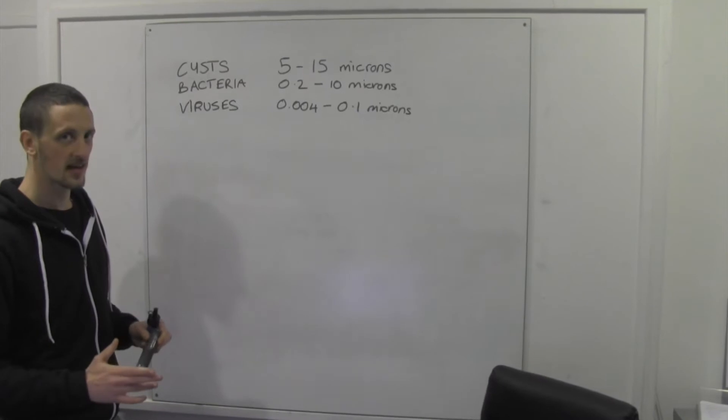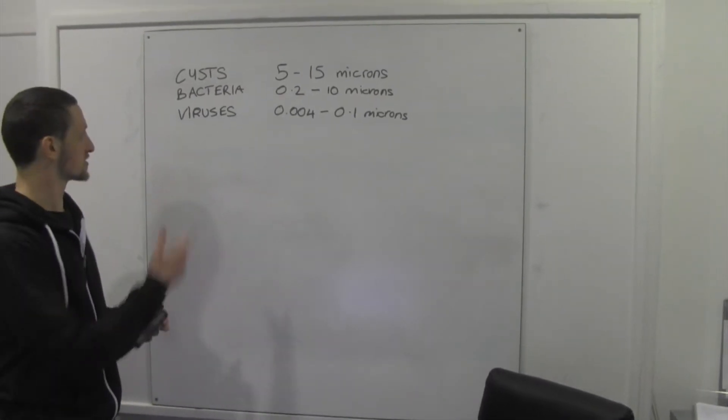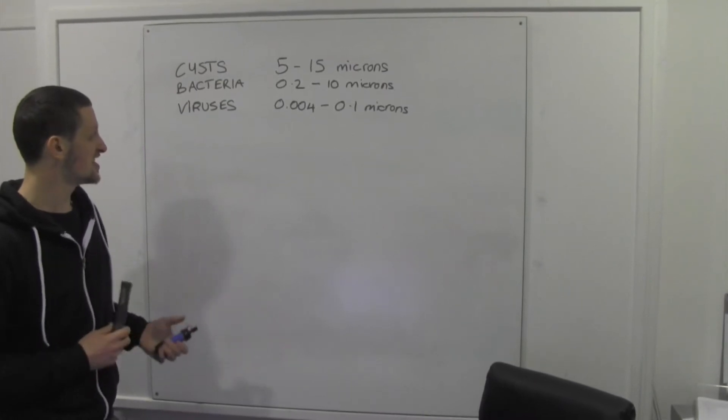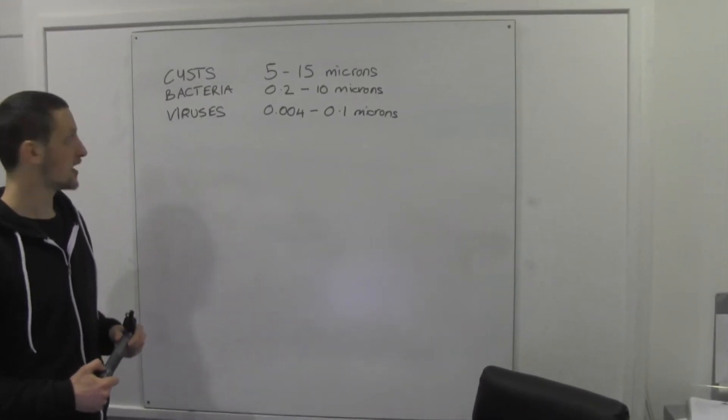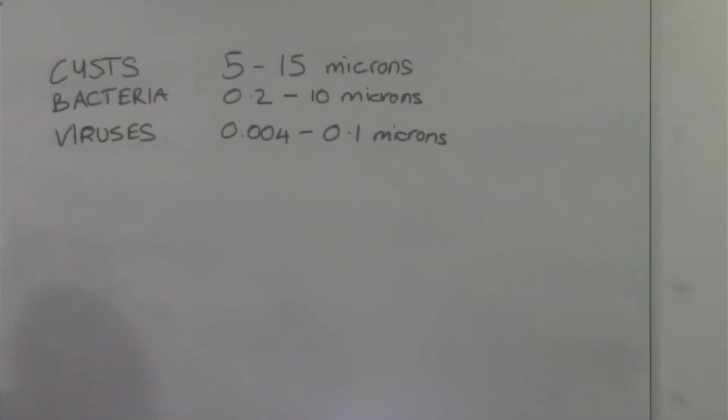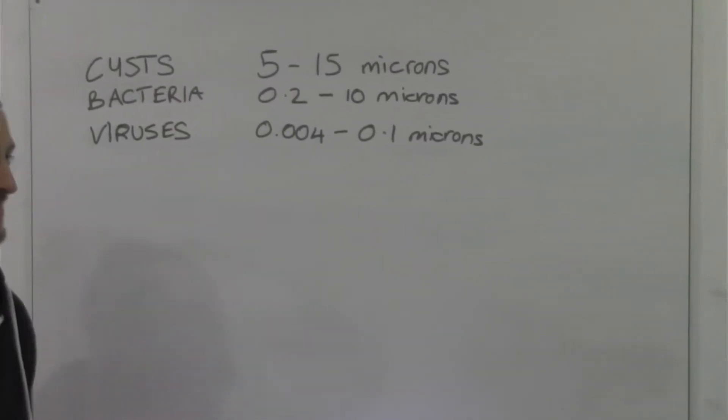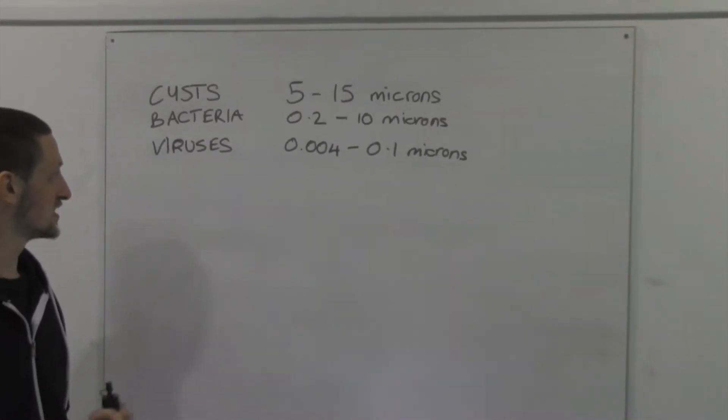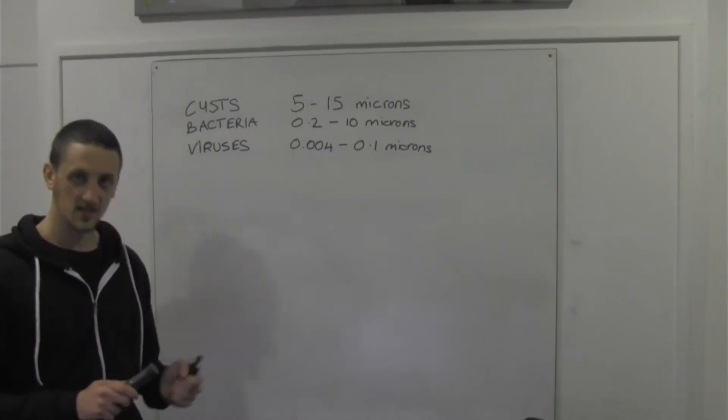Bacteria, this is probably the one you're going to come across the most. Any animals or anything in the area that can pollute the water, this is what they're going to be putting in the water. Viruses, a bit more rare, worth thinking about. They will mess you up. If you have one, it will mess you up. But it's rare you'll come across them. So, right, let's get into it.